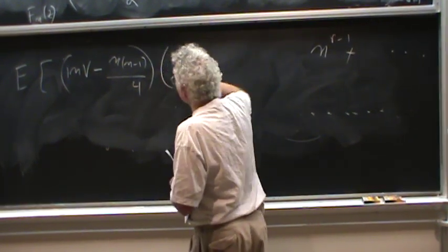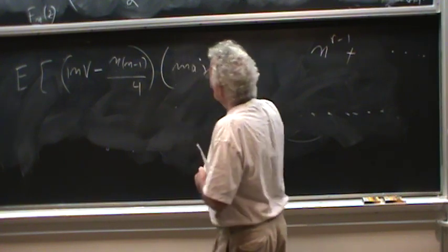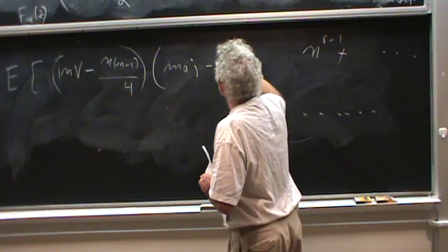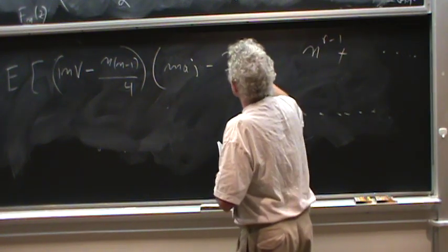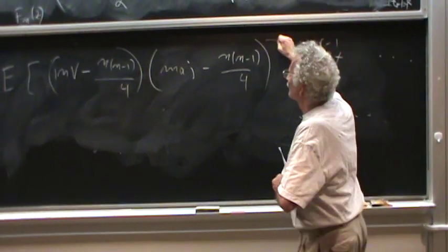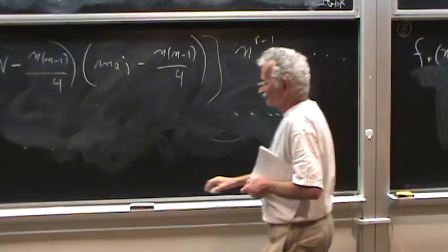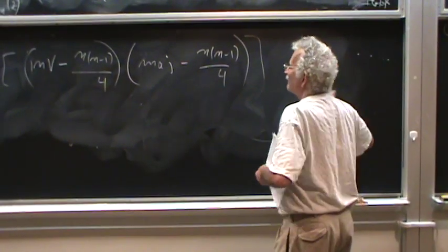Now for the very same permutation, compute the major index and do this. And sum it up, of all permutations, and divide by n factorial,